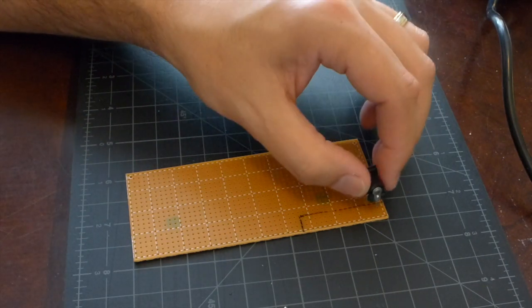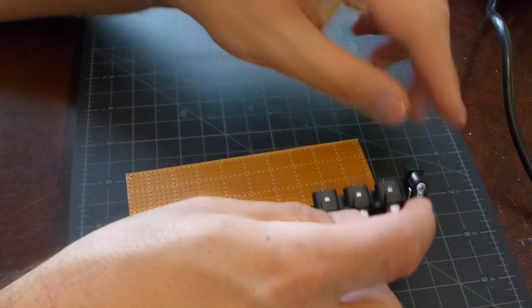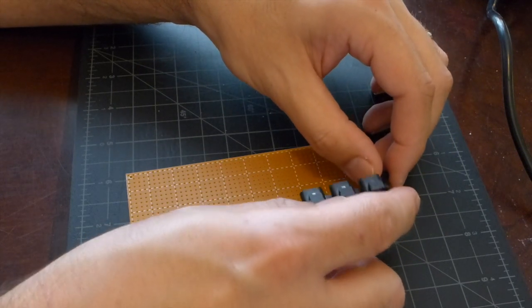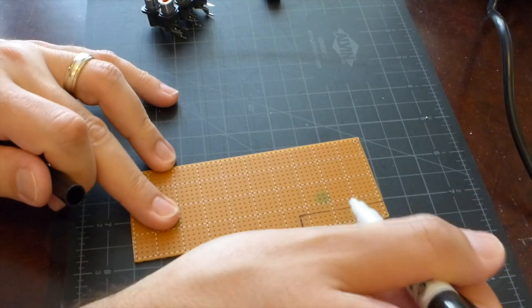Now you want to take your components and line them up on the board to figure out the size. I took the DC power jack and the RCA jack board and placed them on the stripboard to see how large I needed to size the board. Then I marked it with a pen to show where to cut it.